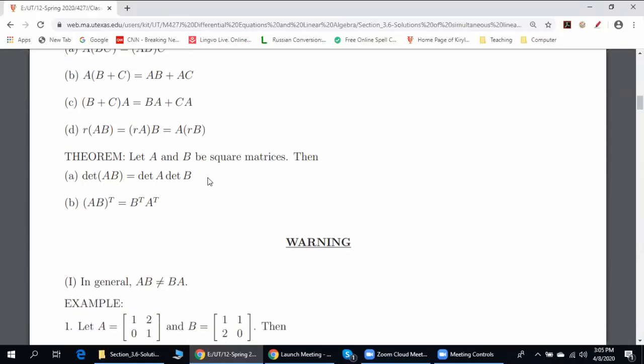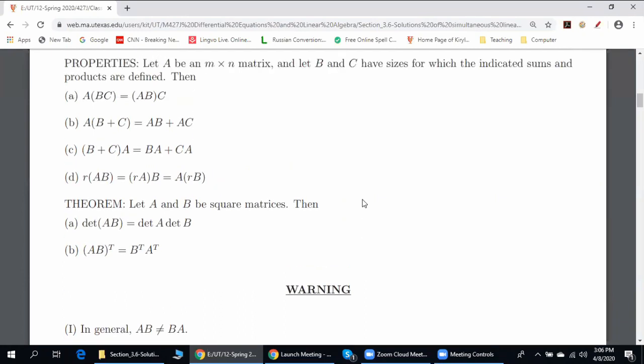Lastly, two very important properties: the determinant of the product is the product of determinants, and when we find the transpose of the product, you can highlight this is a common mistake very often students do. (AB)^T is not A^T B^T; it's actually B transpose times A transpose, folks. Any questions?